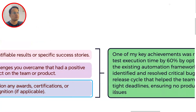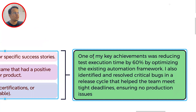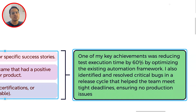For example, you can say: 'One of my key achievements was reducing test execution time by 60%.' But be careful — whatever you claim, you must be able to back it up with proper responses. Whatever you say in 'Tell me about yourself' will set the ground for further follow-up questions. That's why first impression is the last impression. Only mention metrics or achievements if you can explain them further when the interviewer asks.